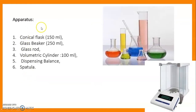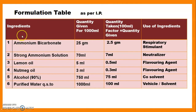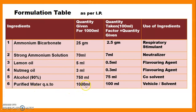The apparatus required for today's experiment includes a conical flask, glass beaker, glass rod, volumetric cylinder, dispensing balance, and spatula. The formulation is as per the Indian Pharmacopoeia formula for 1000 ml: ammonium bicarbonate 25 g, strong ammonium solution 70 ml, lemon oil 5 ml, nutmeg oil 3 ml, alcohol 90% 750 ml, and purified water quantity sufficient to 1000 ml.